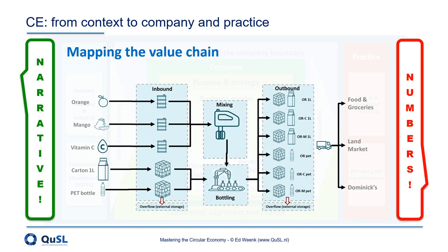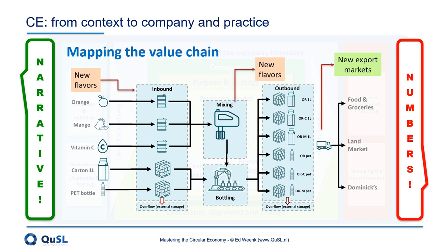Returning for a moment to the network of the juice manufacturer we have seen before, we could now add different alternative scenarios to first visualize the changes so that we have a conceptual understanding of what they are about, and then move on to adding the data to fully understand the potential impacts of the proposed changes. For example, we could add the scenario of exports to new markets, or the addition of new flavors to the product mix, leading to the need for purchasing these new flavors, or the introduction of new packaging types to the product mix, leading to the need for purchasing the new packaging materials, and maybe even to the introduction of a new packaging line.